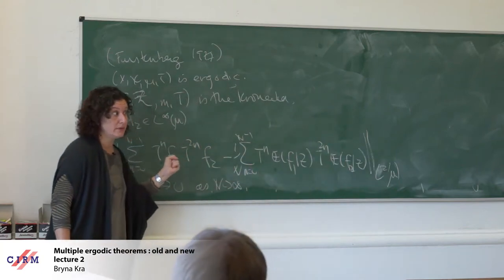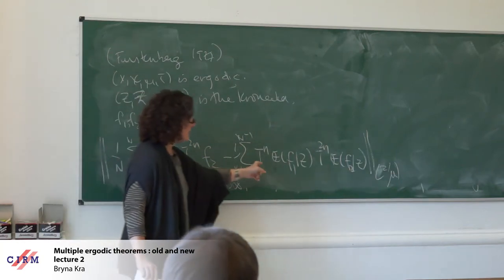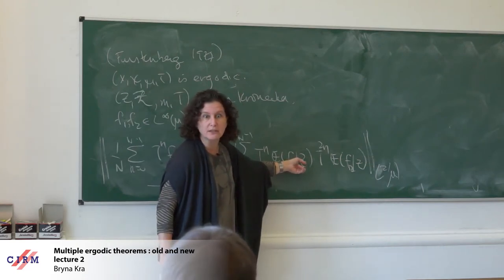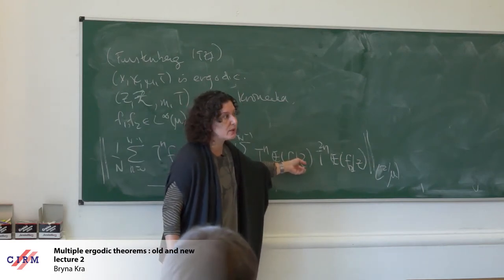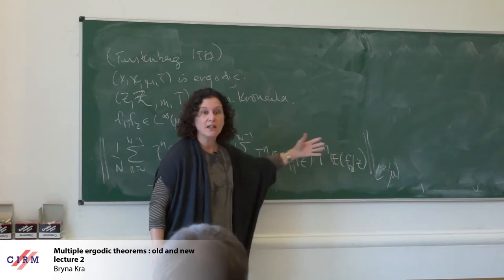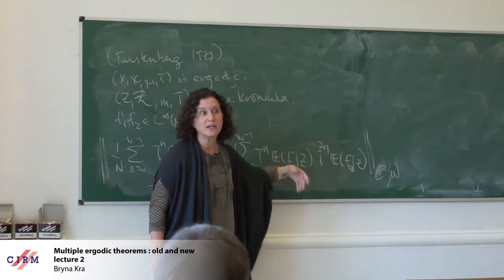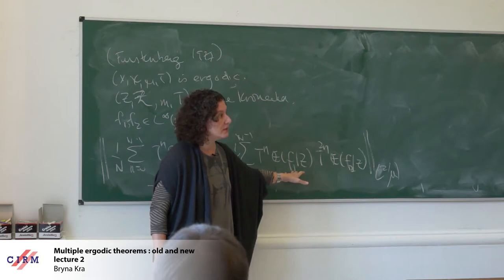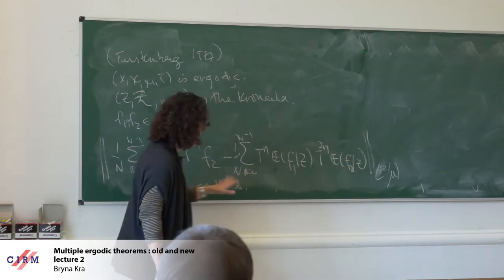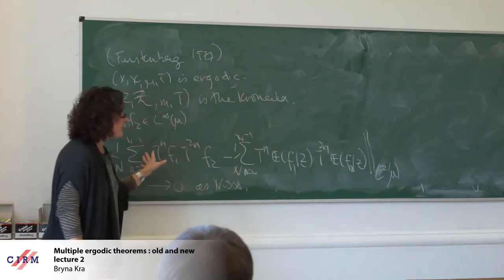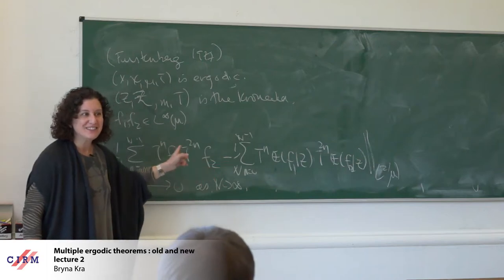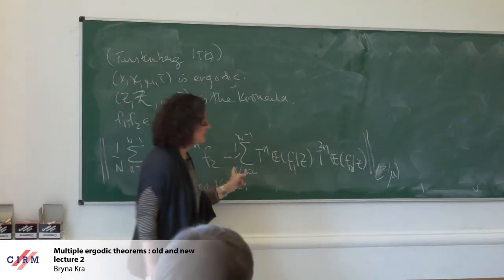What this theorem says is: if you want to compute this average, it suffices to project each of the functions down to the Kronecker factor and compute that average. The two limits exist if and only if both exist, and when they exist they are equal. Because the Kronecker factor is a compact abelian group, we're allowed to use Fourier analysis to compute, and that's a nice exercise. The hard part is to say that this is the right thing to do, the right place to go. Once you're here, you still have to prove convergence, but convergence is the easy part in this problem.